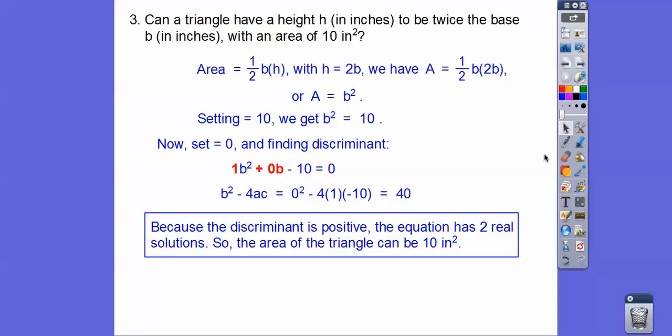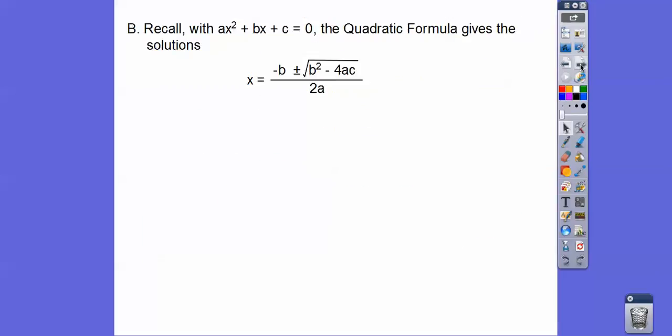So b squared minus 4ac is going to get us 40 right there. And since that's a positive number right there, then we can say that the equation will have two real solutions. So sure, the area of the triangle can be 10 inches squared. So the two real solutions just means that we can get two different widths right here. So our bases, I'm sorry, our heights, there's two different dimensions right there.